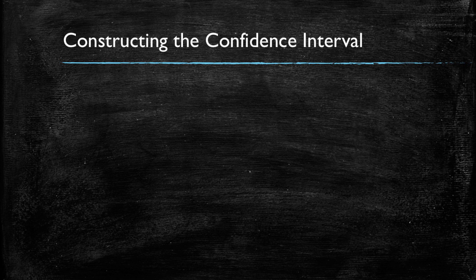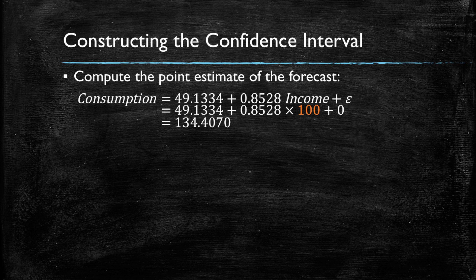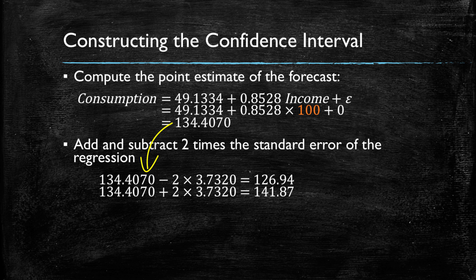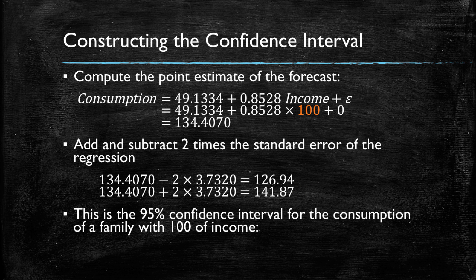It is very similar and analogous to what we had done before. The first thing we must do is compute the point forecast, which is going to be the center of our confidence interval. To do this, we substitute income for the observed value and obtain a point estimate for the unobserved value of consumption, which in this case was 134. Then we take the standard error of the regression and add it and subtract it two times to this point estimate. Specifically, we take the 134 and subtract two times the standard error of 3.73. This gives us the lower bound for the confidence interval. And then we take the same 134 and add two times the standard error to attain the upper bound of the confidence interval. And what we get is a 95% confidence interval for the consumption of a family with $100 of income that is going to be lying between 126 and 141.